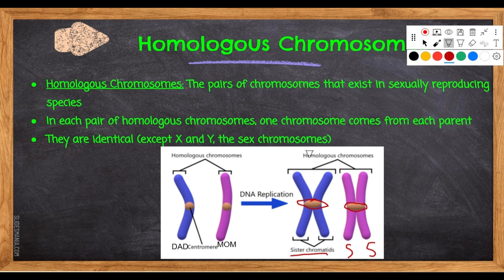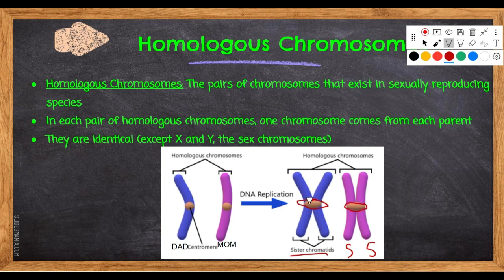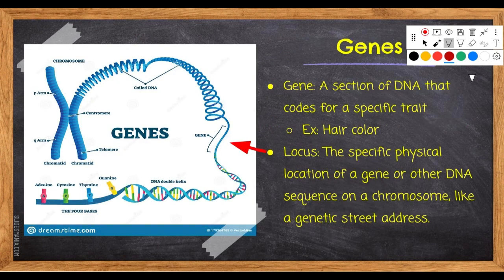These two pinkish-purple ones are sister chromatids because they're connected by the centromere. They are homologous because in each pair of homologous chromosomes one chromosome comes from each parent. They are identical except for the X and Y sex chromosomes. For example, if this chromosome from dad has the gene for eye color, then the mom's chromosome also has the gene for eye color — that's why they're homologous: same genes, but one from mom and one from dad. So this one could code for brown hair from dad and this one for red hair from mom.